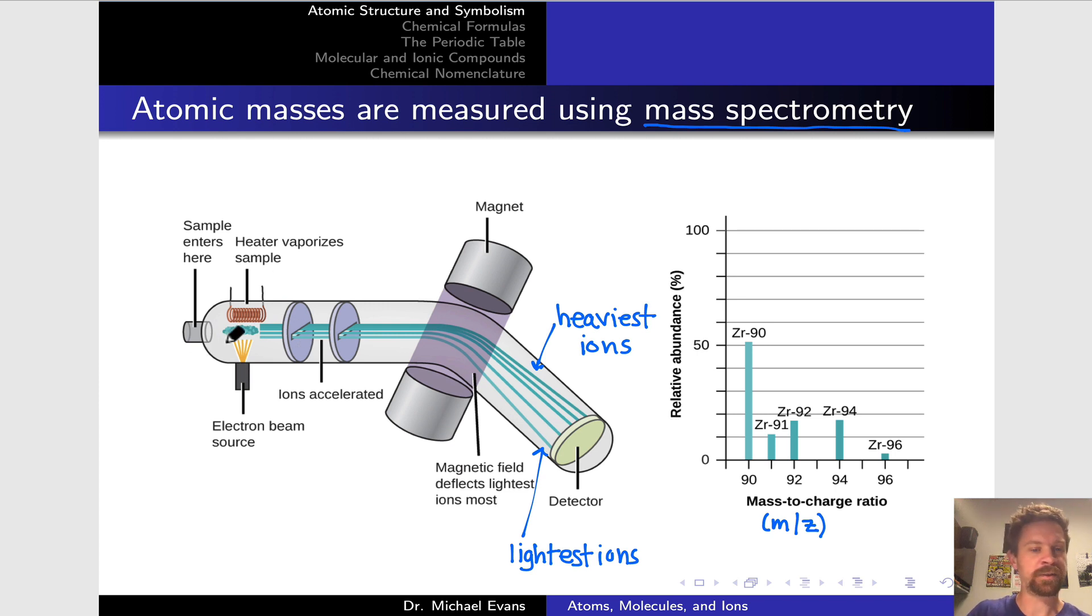Here, for example, imagine we had a sample of zirconium atoms coming in. Zirconium has the symbol Zr. After ionization and deflection, we get this graph of the relative abundances of the elements. The vast majority of zirconium is relatively light, zirconium-90. Remember that 90 is the mass number, with smaller amounts of zirconium-91, 92, 94, and 96.